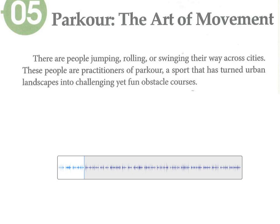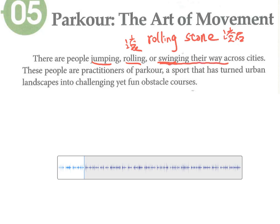swing就是摇摆，甩来甩去那种。'swing their way' 的意思就是说他不是走直线，他是这样子左跑右跑地走，'across cities' 在城市之间。